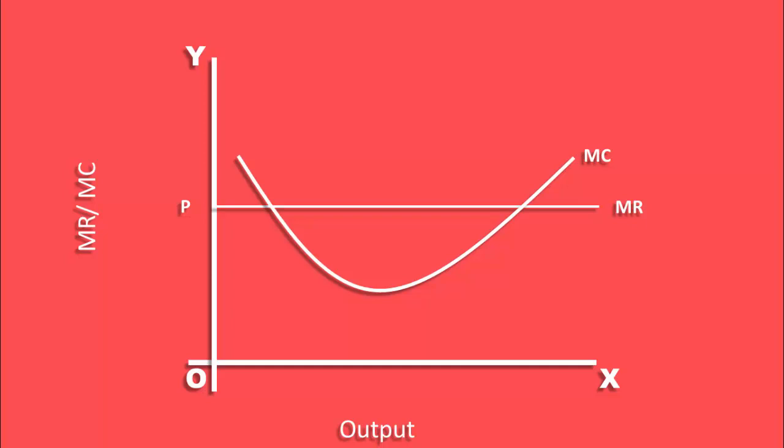As the firm expands its output, marginal cost diminishes to begin with. After reaching the minimum, it starts increasing.